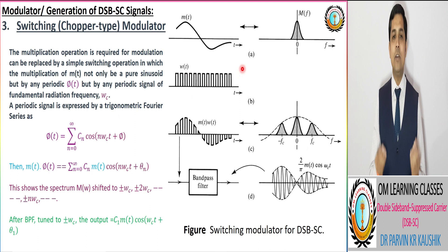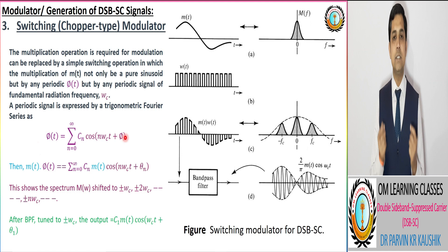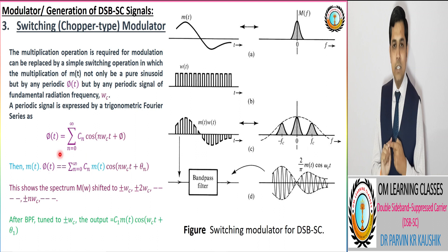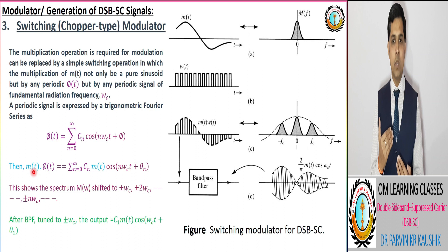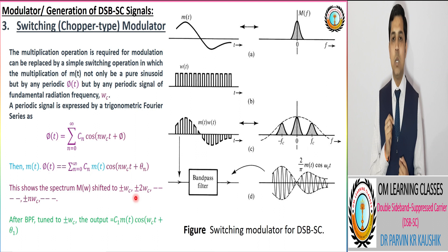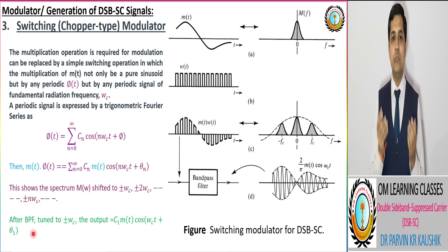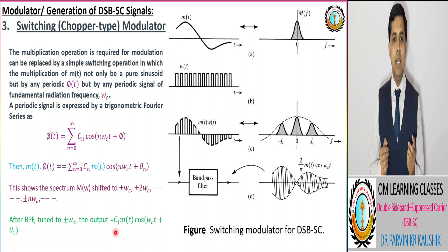By using the trigonometric Fourier series, we have the mathematical representation of a periodic signal p(t), corresponding to a summation where cn are the coefficients, cos(n·ωC·t + φ). The important thing is that the radial frequency corresponds to the carrier signal. By multiplying this periodic signal with the modulating signal, we get the spectrum corresponding to ±ωC, ±2ωC, ±3ωC, and so on. By utilizing the band pass filter centered at ±ωC, we get our desired DSB-SC signal.